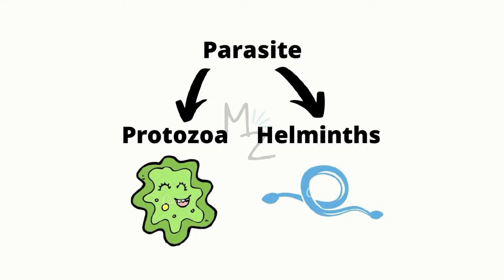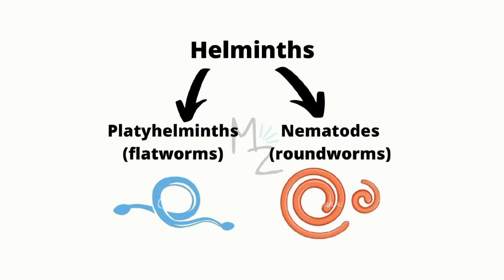A parasite is an organism that needs other organisms for its survival. It is further classified into protozoa — for example, Entamoeba histolytica — and helminths — for example, Taenia saginata. Helminths are further classified into platyhelminthes, also termed flatworms (e.g., Diphyllobothrium latum), and nematodes, also termed roundworms.